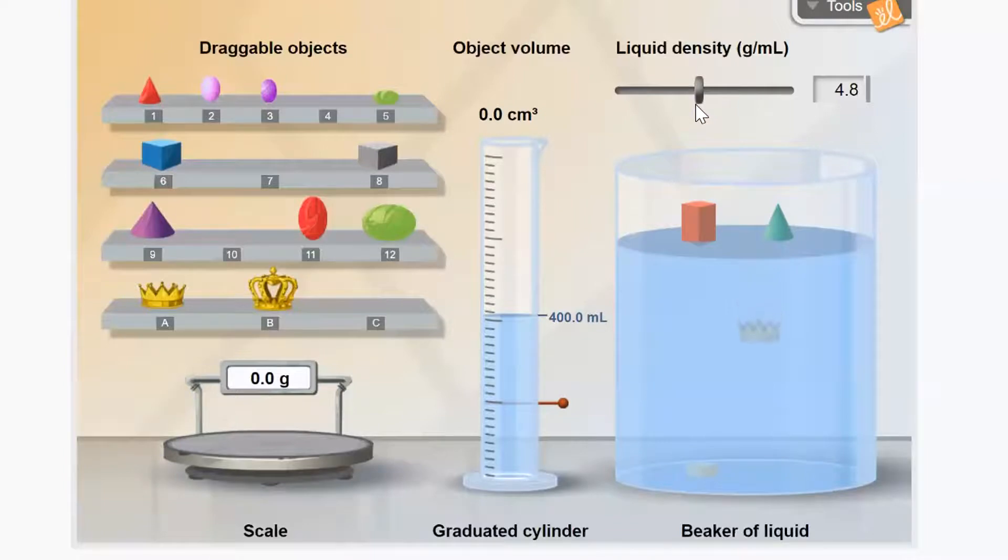Now if we raise it up just a little bit, it goes up. And so, that means that must be very close to the actual density of the crown. Okay. So, let's now talk about Archimedes.